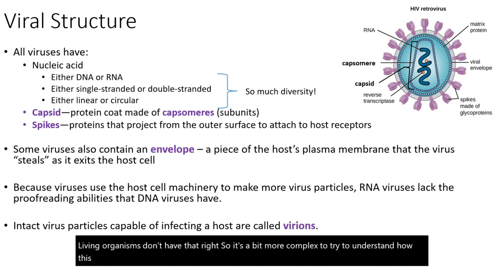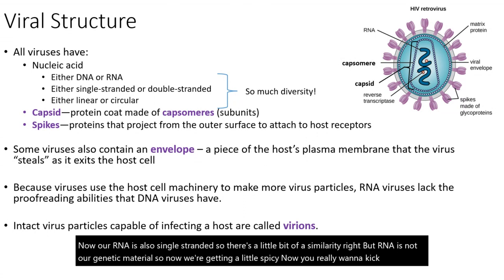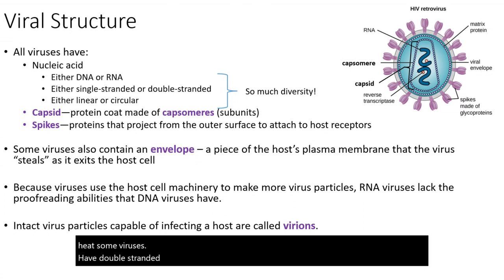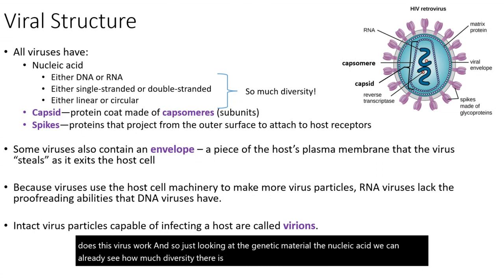To really spice things up, some viruses only have single-stranded RNA. Our RNA is also single-stranded, so there's a little similarity, but RNA is not our genetic material. And if you want to kick up the heat, some viruses have double-stranded RNA — we don't have that. So just looking at the nucleic acid, we can already see how much diversity there is. Some viral nucleic acid is linear, some are circular — even more complexity.